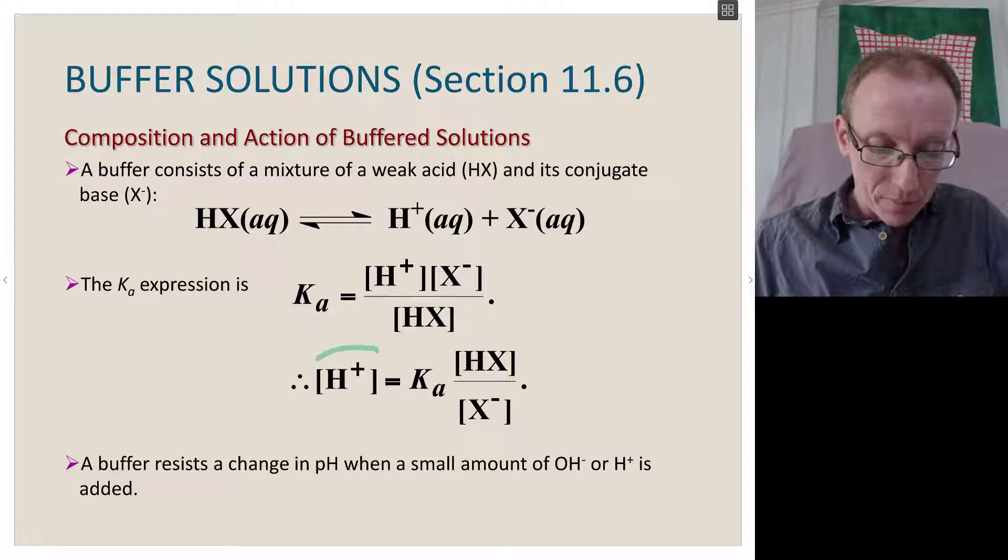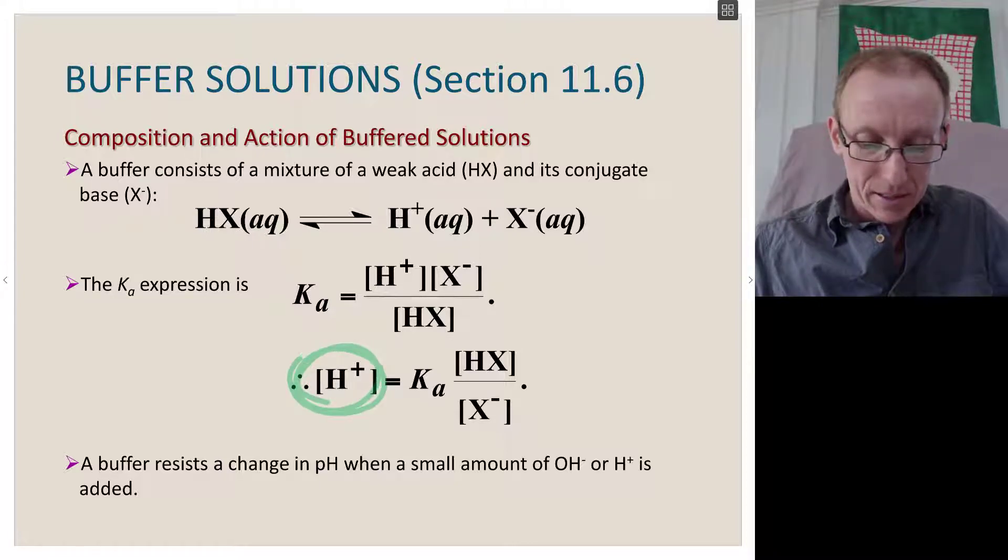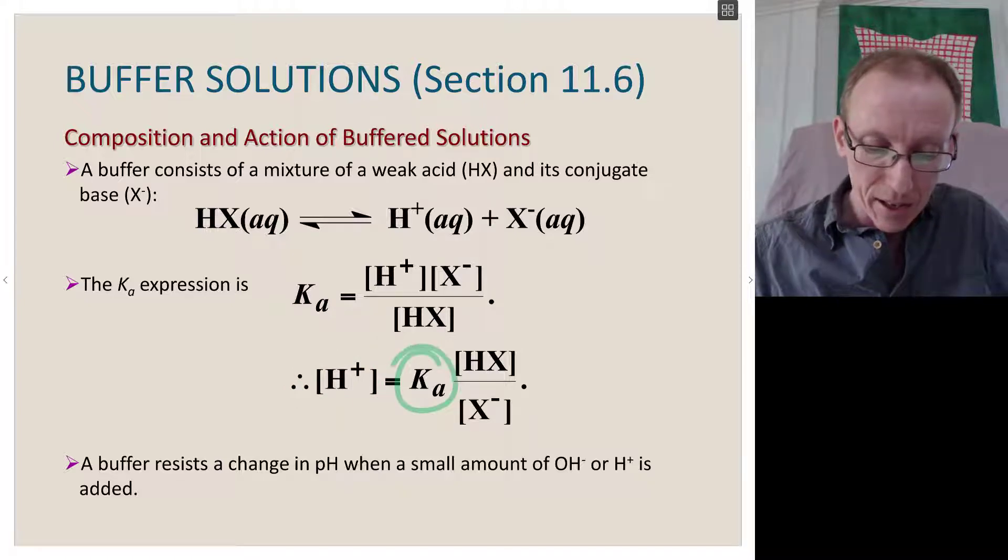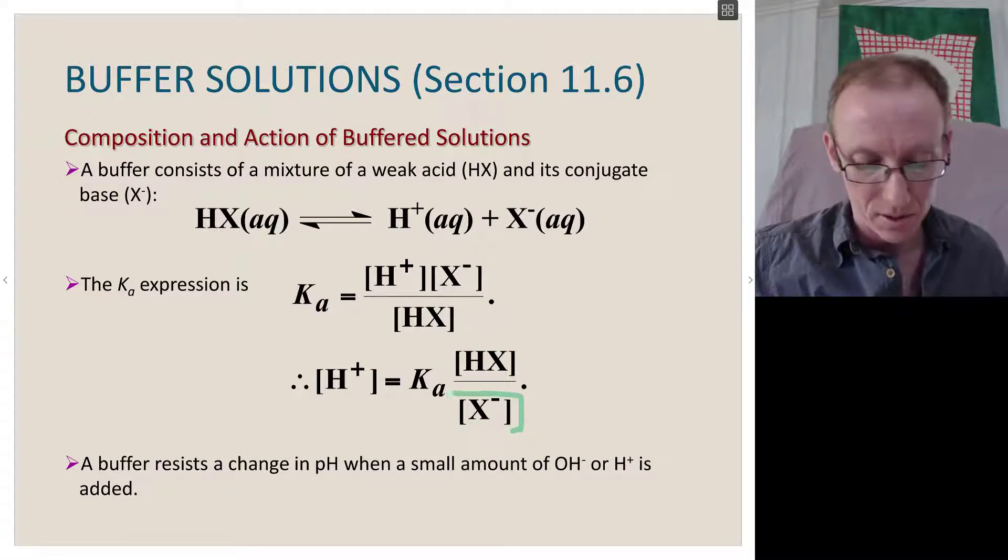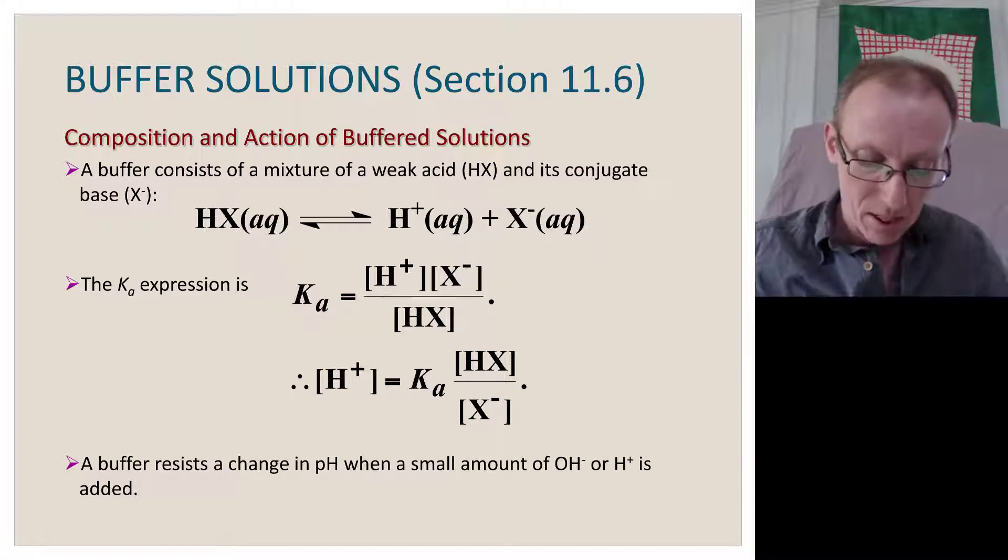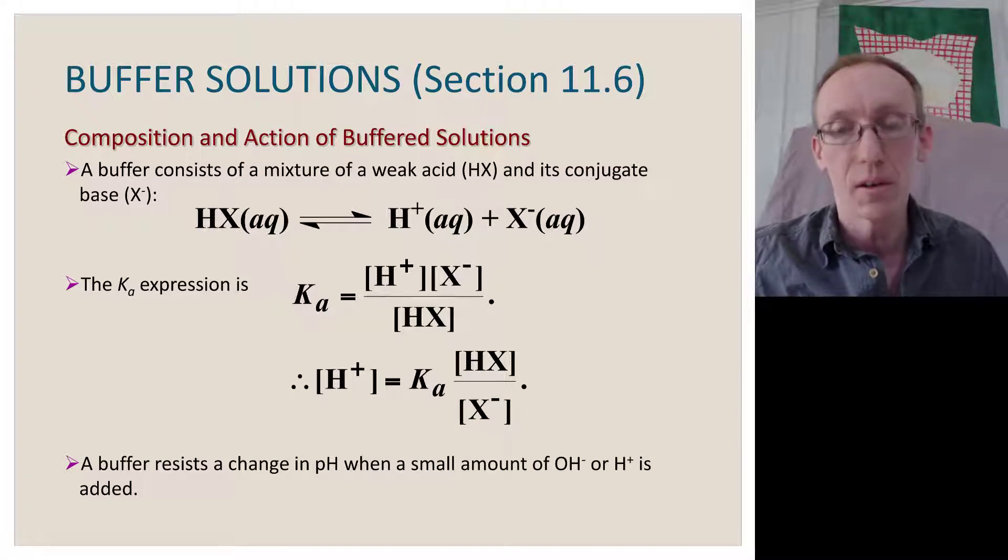The concentration of protons, which is related to the pH, is then by rearrangement of this equation the Ka value times the concentration of the weak acid divided by the concentration of its conjugate base. So a buffer resists change in pH values when a small amount of hydroxide or proton is added from a strong acid source.